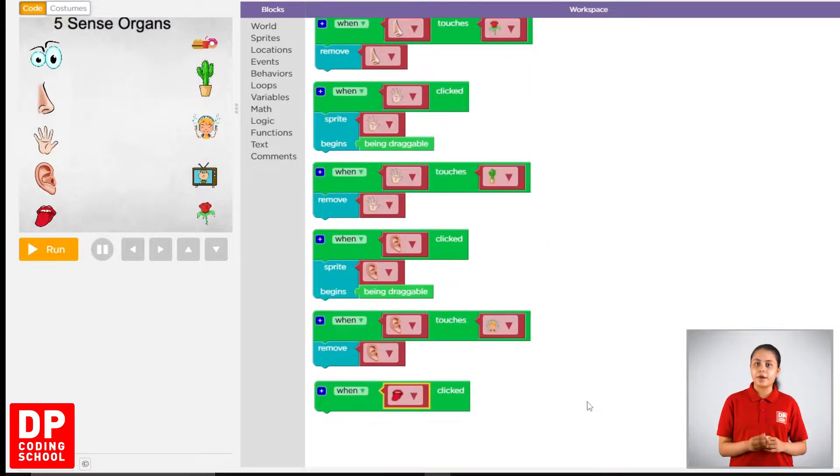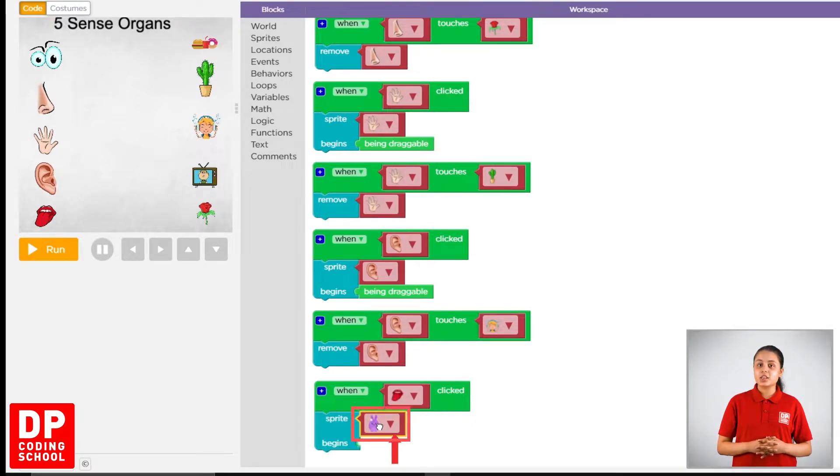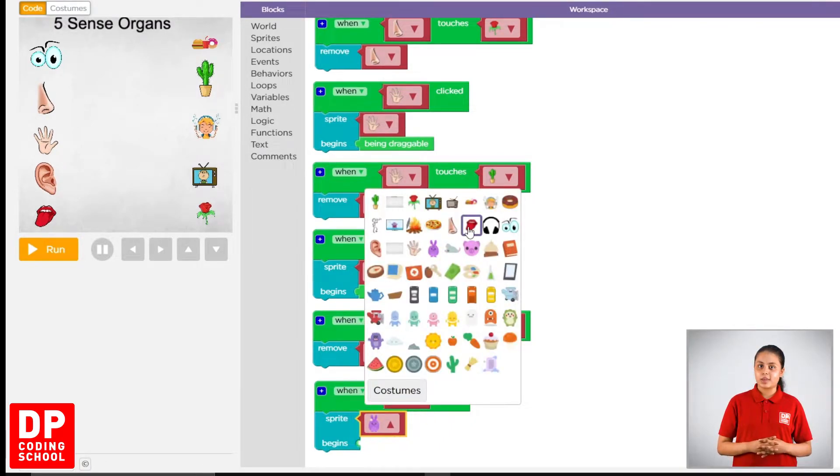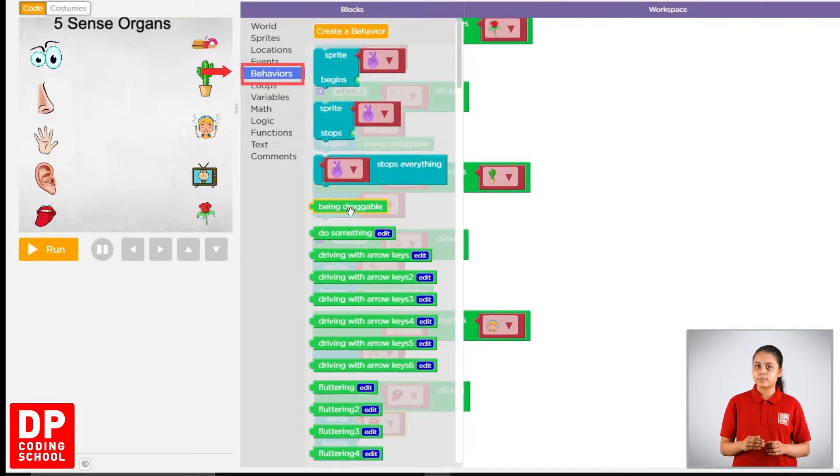After this, we click the behavior button. Then, we drag the button button to the block. If you click the button button to the block button, then we click the button button. So, we click the behaviors button. It is now the being-draggable button.